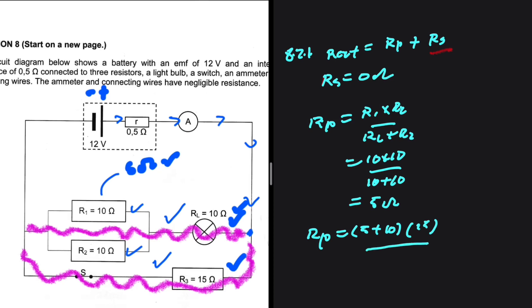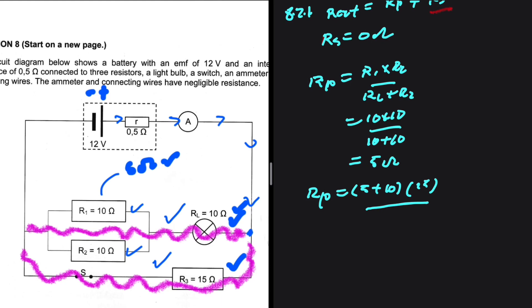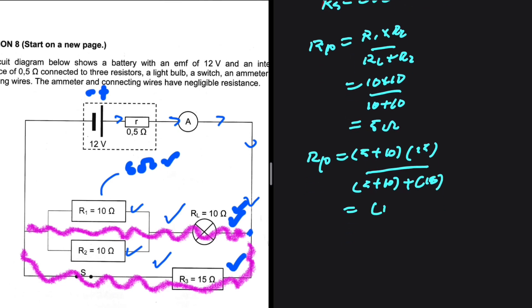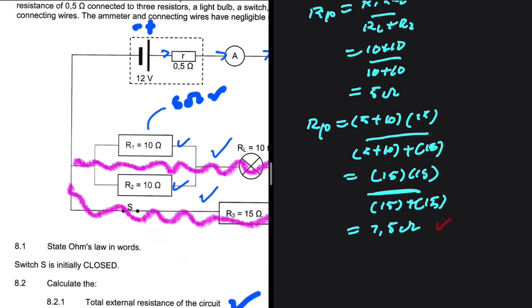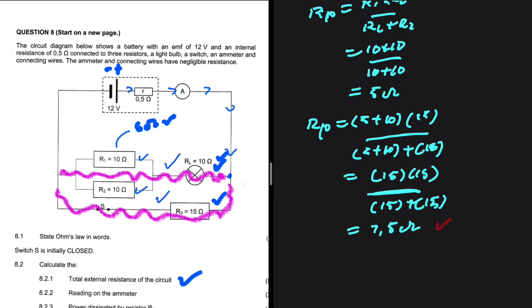Everything divided by R1 plus R2. So that is 5 plus 10 plus 15. On the numerator, we have 15 plus 15. R_P will equal 7.5 ohms. So this is the total external resistance of our circuit. It is 7.5 ohms.